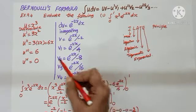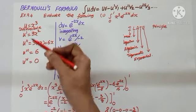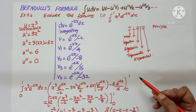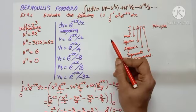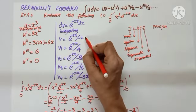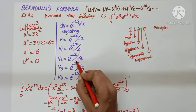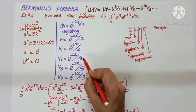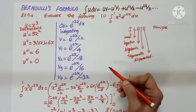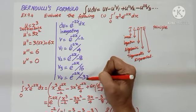Successive differentiation: x cubed becomes 3x squared, then 6x, then 6, then 0 — so differentiation terminates. Integrating e power minus 2x gives e power minus 2x by minus 2. Each successive integration multiplies the denominator by minus 2: giving denominators minus 2, then positive 4, then minus 8, then positive 16. Every time I integrate e power minus 2x, the denominator keeps getting multiplied by minus 2.